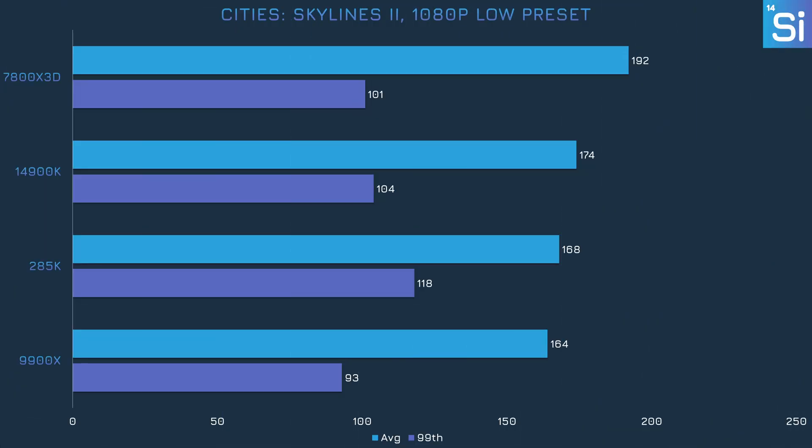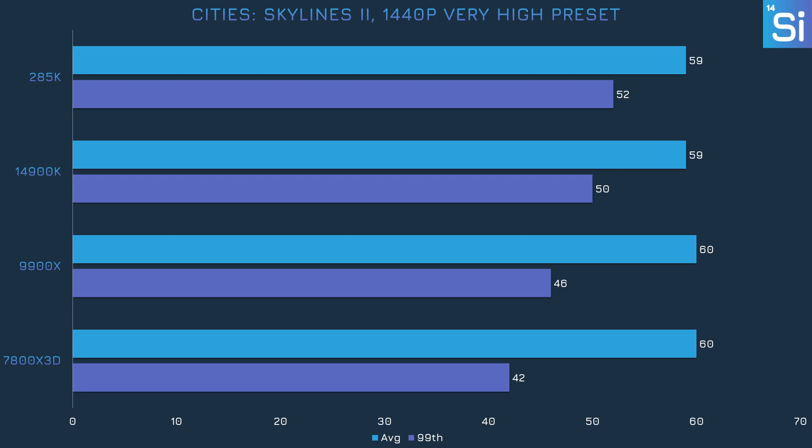Cities: Skylines II mostly favors the 7800X3D at 1080p with low graphics settings, while the other three chips performed roughly the same. Although the 285K had a lower average frame rate than the 14900K, its 99th percentile was a fair bit higher. If you just look at the average frame rate, all CPUs performed pretty much the same at 1440p with the very high preset, but there were significant differences in the 99th percentile. Here, the 285K ends up in the lead with a great 52 fps 99th percentile result, while the 7800X3D ends up in last place.